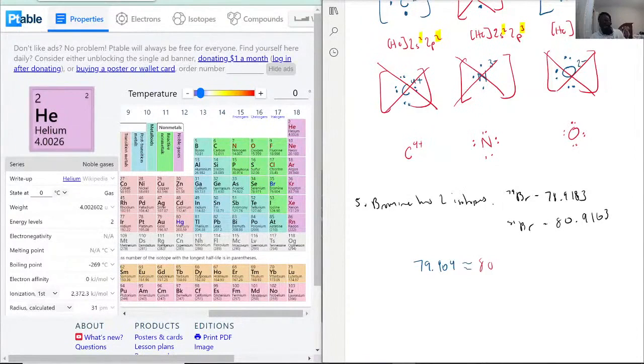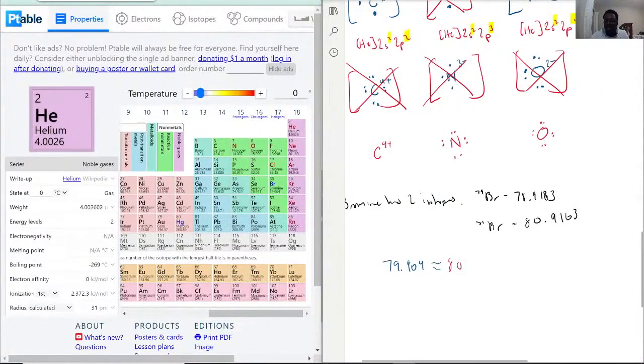If you look at the isotopes for bromine, we have 78.9183, which rounds to 79, and 80.9163, which rounds to 81. Now how is this relevant?